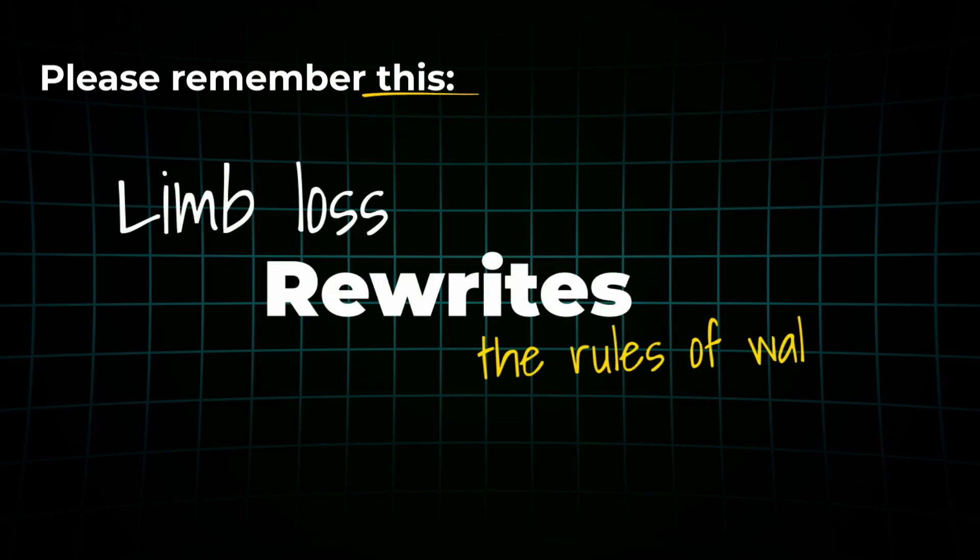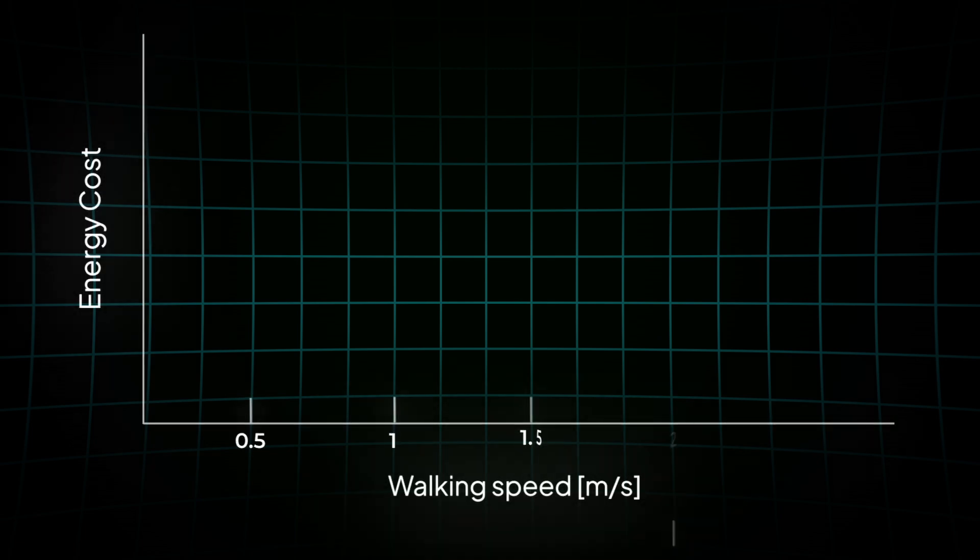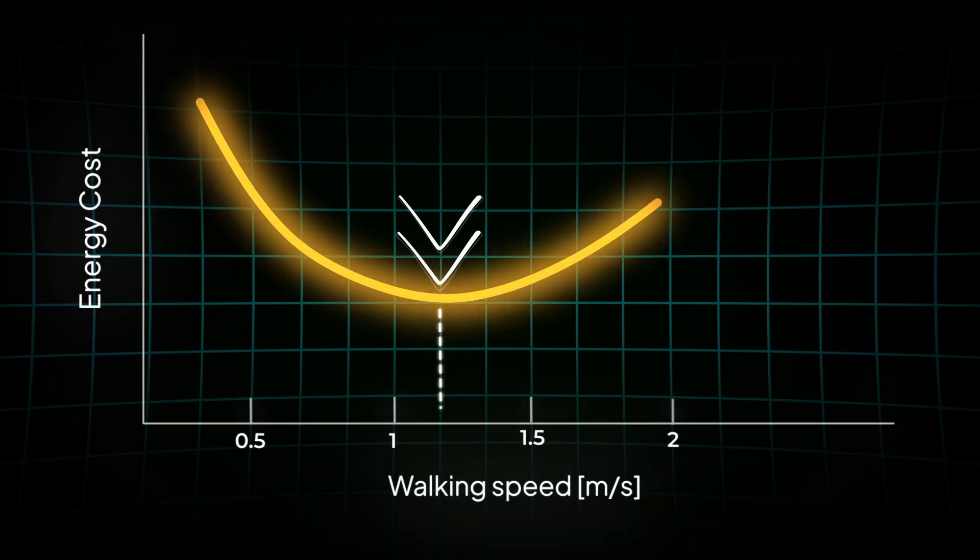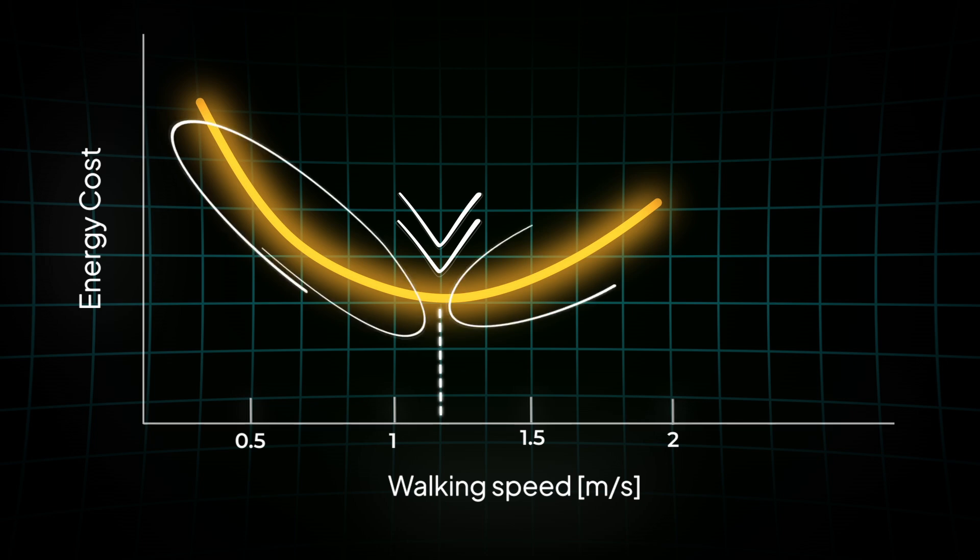Here's something every prosthetist needs to understand. Losing a limb doesn't just remove tissue, it rewrites the rules of walking. Humans have a natural sweet spot for their walking speed at around 1.2 meters per second. We burn the least amount of energy per distance on flat ground. Go slower or faster, and your energy cost spikes.